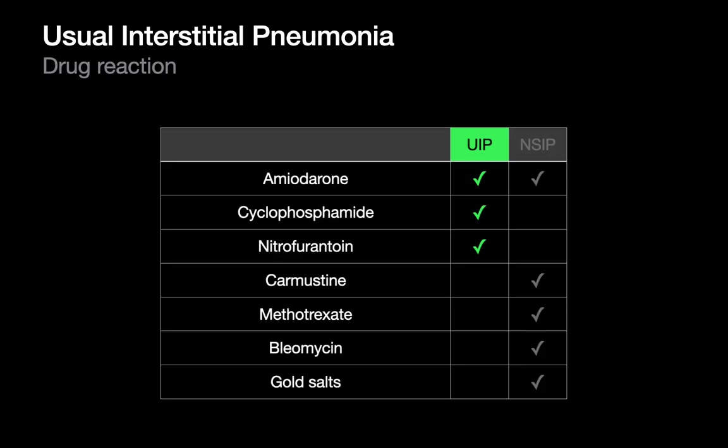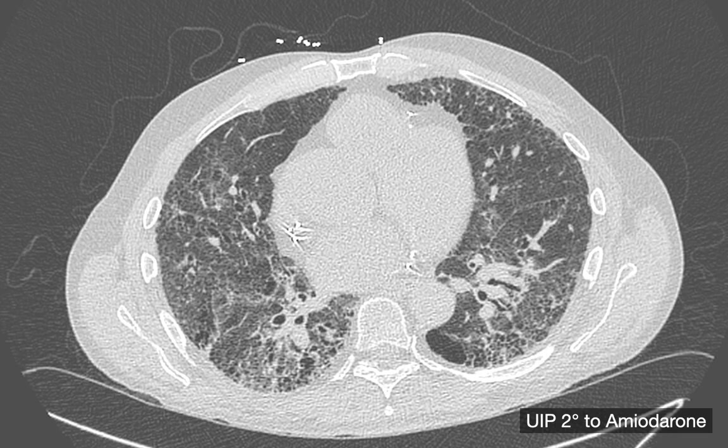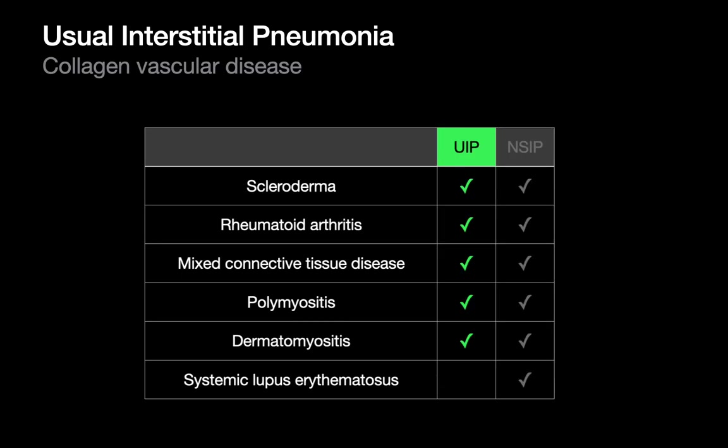Not all UIP cases are idiopathic. Drug toxicity is one cause — no need to memorize the drug list, as it's easily looked up. Collagen vascular disease is another potential cause — the collagen vascular disease irritates the lung, and UIP is the injury response. Most collagen vascular diseases, with the exception of lupus, can lead to a UIP picture in some people.